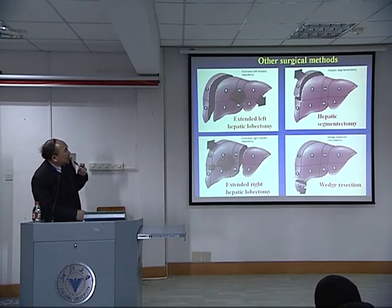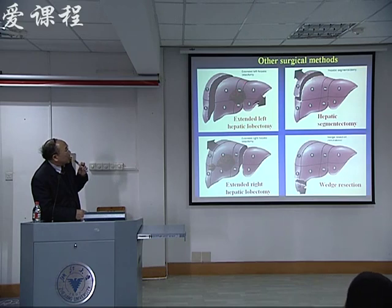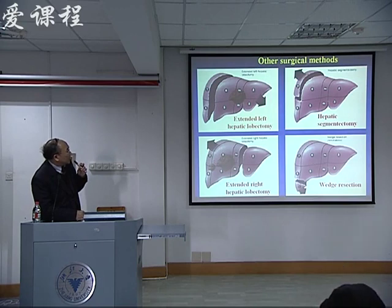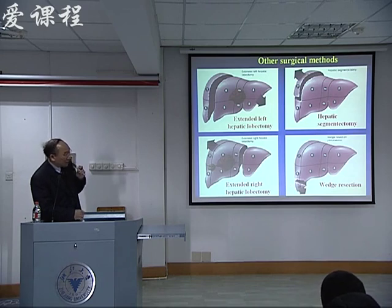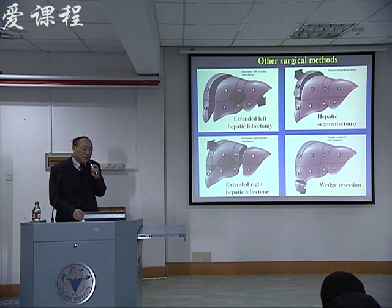Another type of resection includes extended left hepatectomy, hepatic segmentectomy, and extended right hepatic lobectomy. We do the resection — the resected specimen looks very small. So different types of resection depend on how large or small the tumor is.